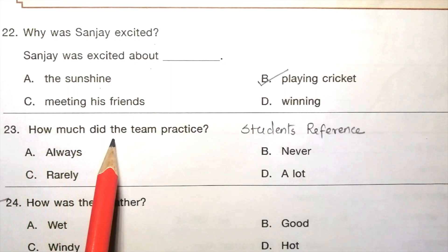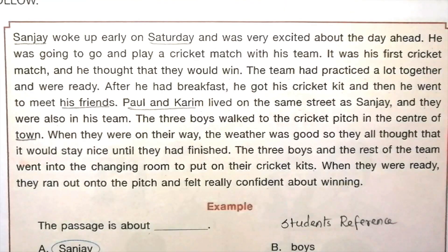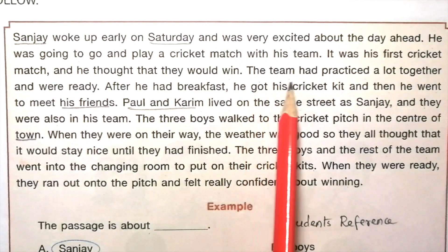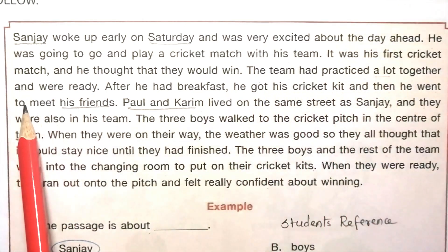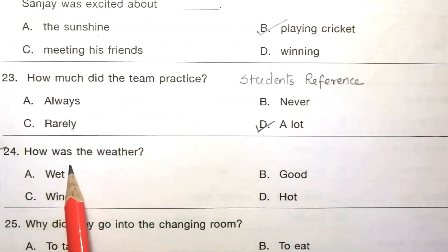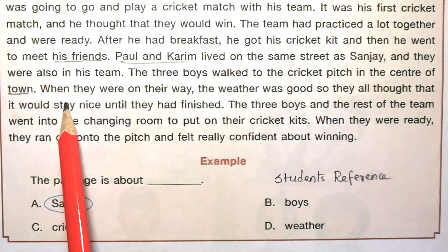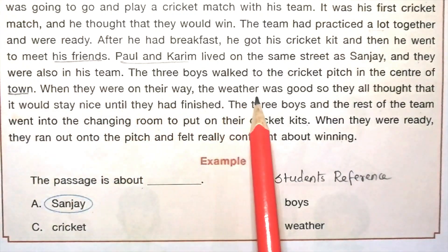Question 23: How much did the team practice — always, never, rarely, a lot? The answer is D, a lot. The passage states: the team had practiced a lot together and were ready. Question 24: How was the weather — wet, good, windy, hot? The answer is B, good. The passage states: when they were on their way, the weather was good.